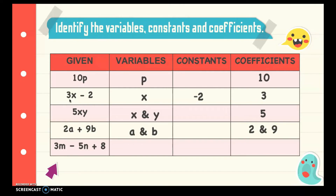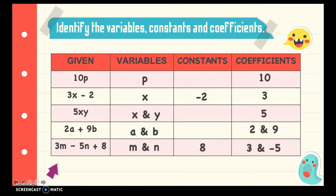For 3m minus 5n plus 8: the variables are m and n, the constant is 8, and the coefficients are 3 and negative 5 — since the operation beside 5n is subtraction, we include the negative sign, giving us negative 5.